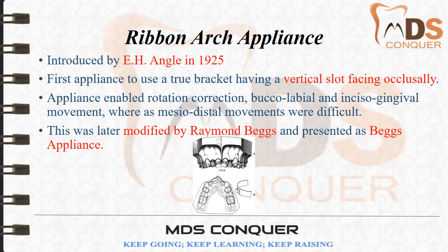Raimond Begg was a student at Angle's school of orthodontics. He learned the ribbon arch technique and when he moved back to Australia in 1925, he started practicing the ribbon arch appliance and modified it into a better technique, presenting it as Begg's appliance. Begg's appliance is essentially a modification of the ribbon arch appliance.